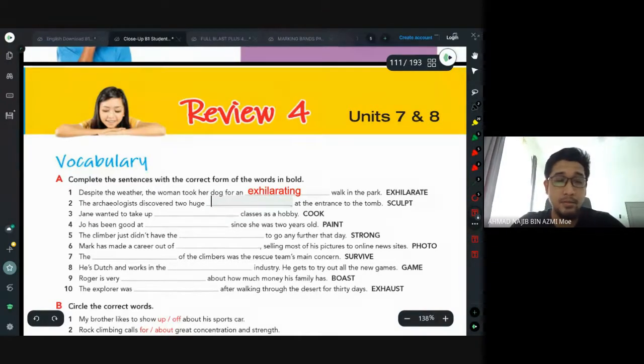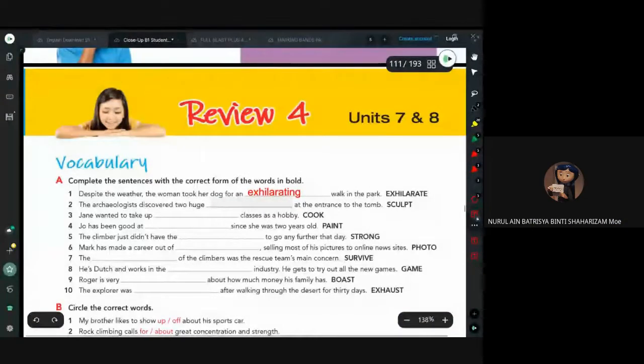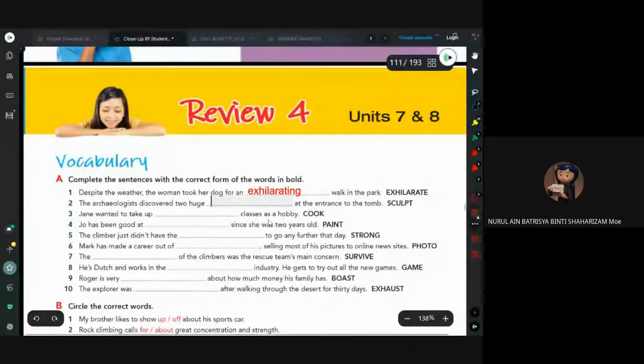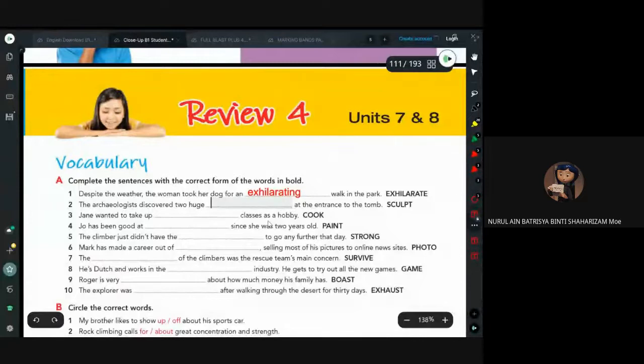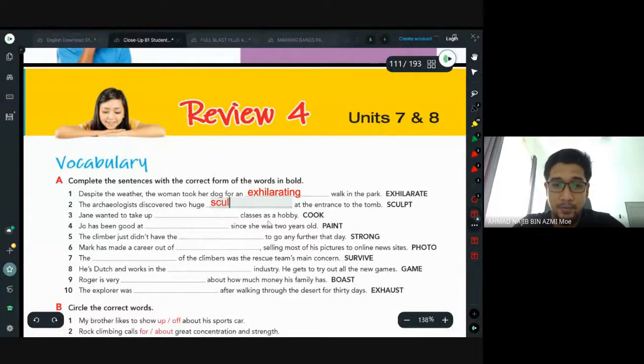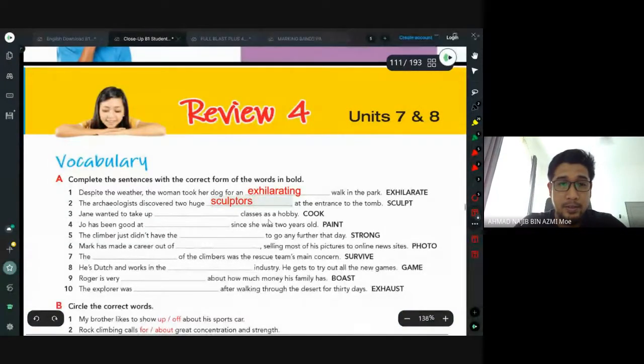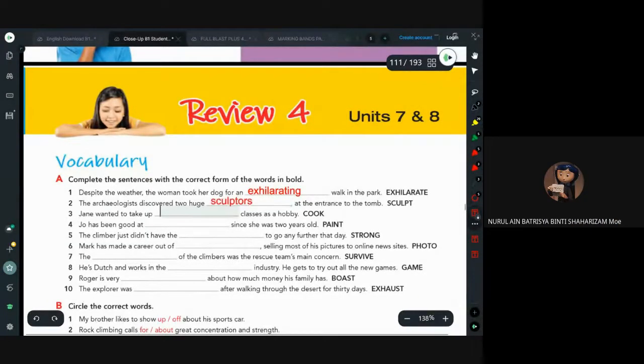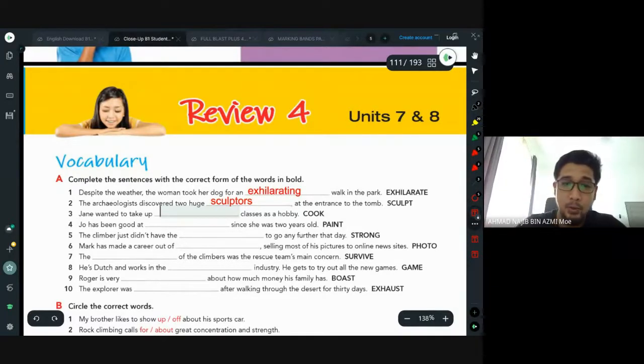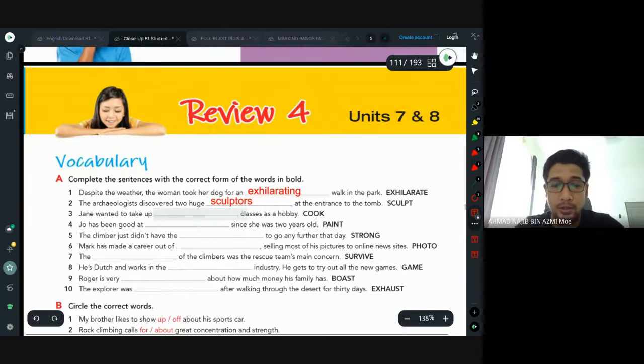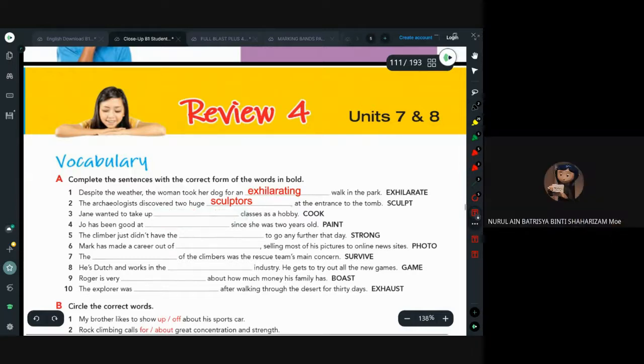Number two: the archaeologists discovered two huge sculpture at entrance to the tomb. Make sure you make it plural: sculptures. Jen wanted to take up cooking classes as a hobby. Cooking is correct, but there is also another one you can use: cookery classes.